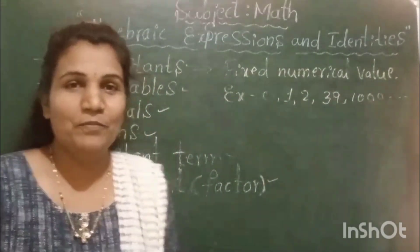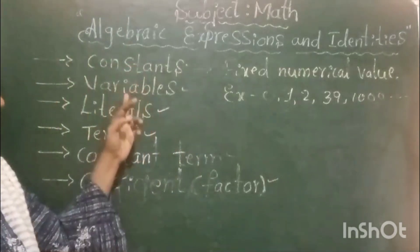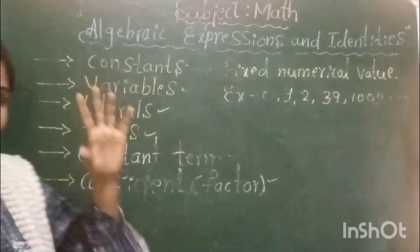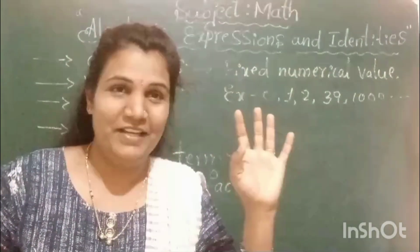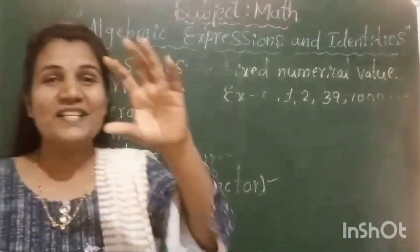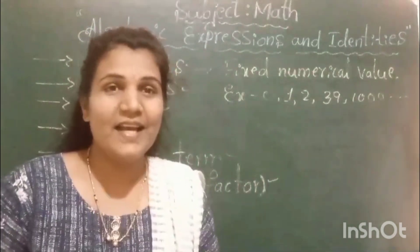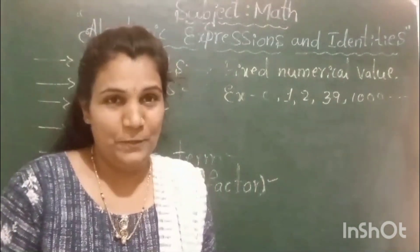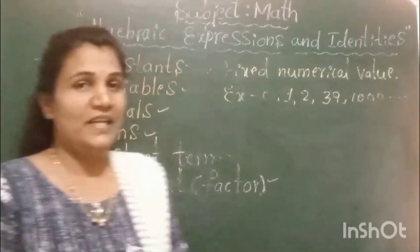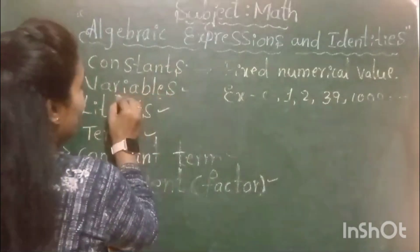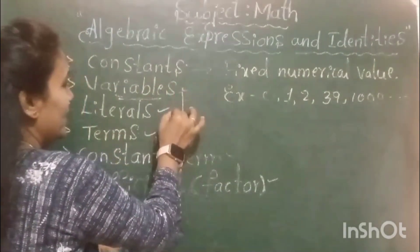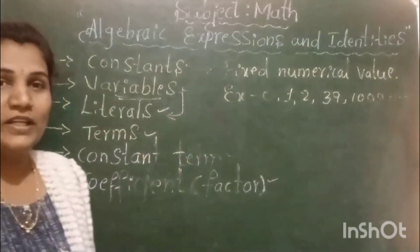Let us now learn about variable. Constants and variables are opposite in nature. A constant has a fixed numerical value, but a variable is a quantity which does not have a fixed numerical value. Variables are represented by literals.